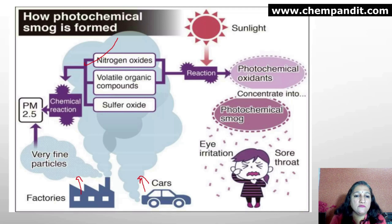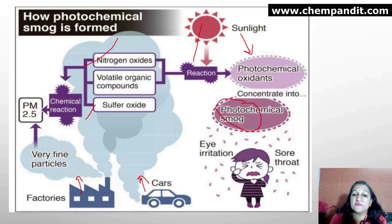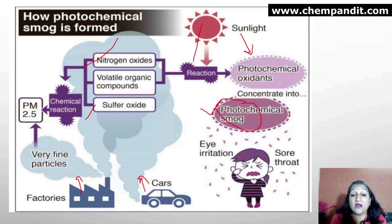Chemical reactions occur in the presence of sunlight and produce photochemical oxidants. Photochemical smog is oxidizing in nature, whereas normal smog is reducing in nature. Because it is oxidizing, it is very harmful — especially for humans, all living beings, and all animals. It causes eye irritation and throat problems.